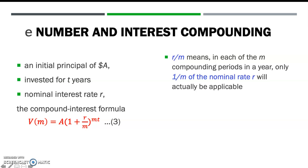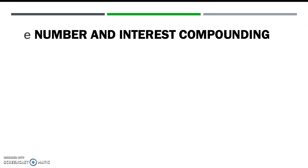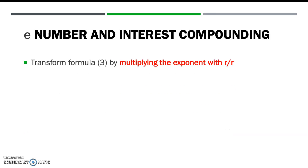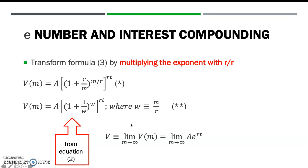The quotient R/M means that in each of the M compounding periods in a year, only 1/M of the nominal rate R will actually be applicable. The exponent MT tells us that since interest is compounded M times a year, there should be a total of MT compoundings in T years. Formula 3 can be transformed into an alternative form by multiplying the exponent by R over R. With some rearrangement, this part is equivalent to equation 2, so we can replace it with the Euler number.